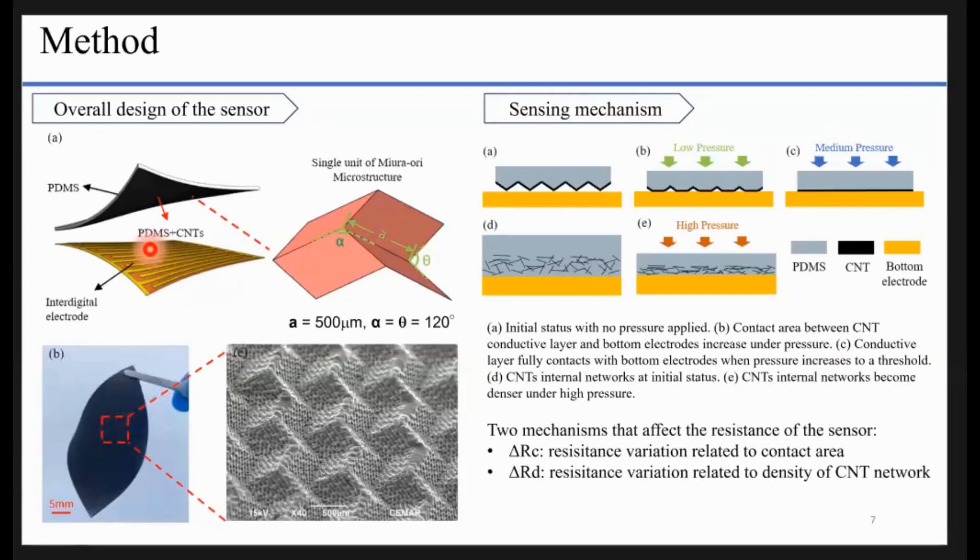As shown in figure one on the right side, we have dense CNT network on the surface. Here shows the zoom-in structure of the CNT network at the beginning. When we apply pressure onto the sensor, the contact area will change, will become large, and it will reduce the resistance of the whole sensor.